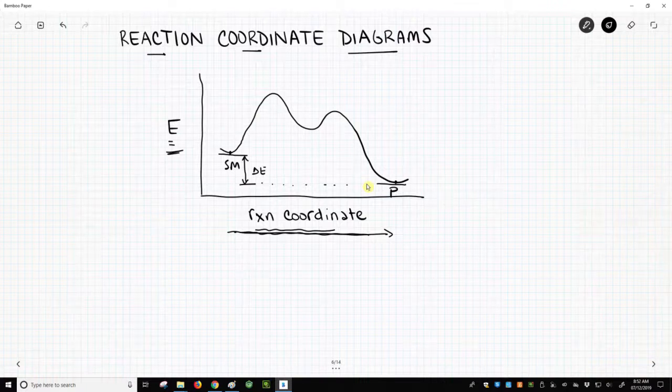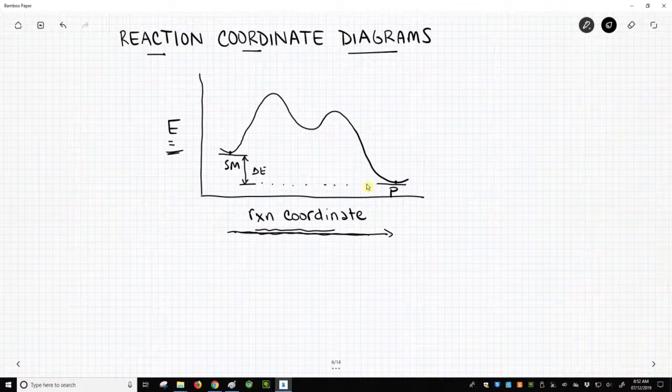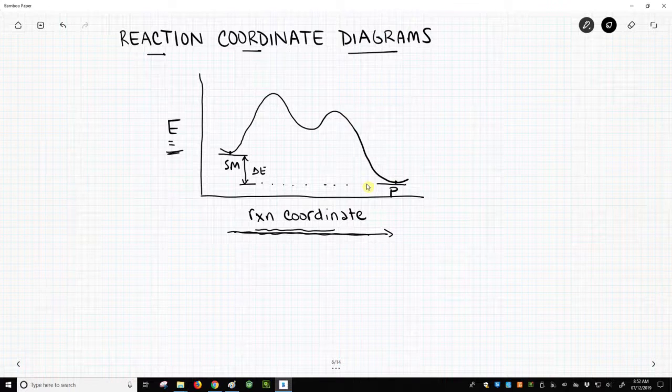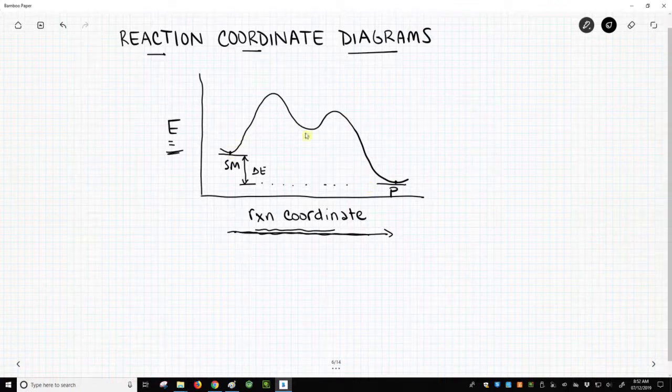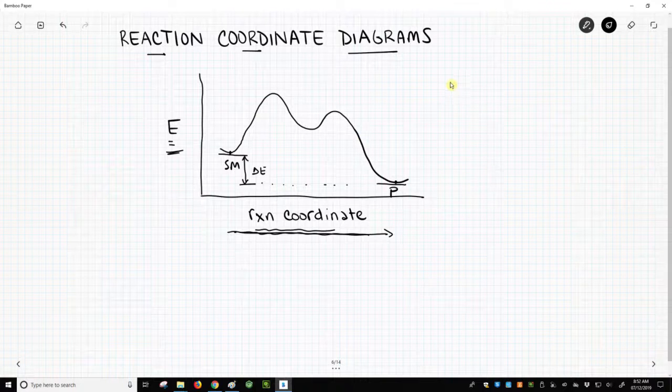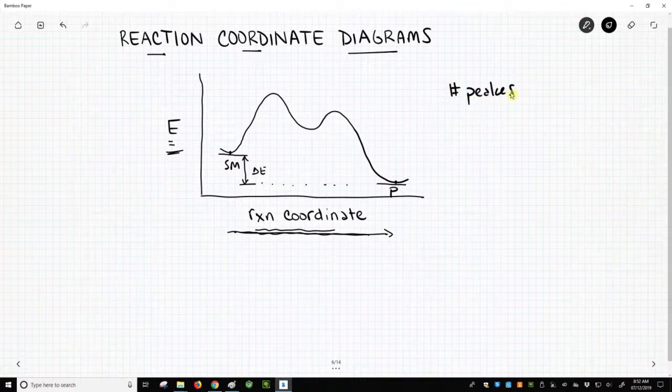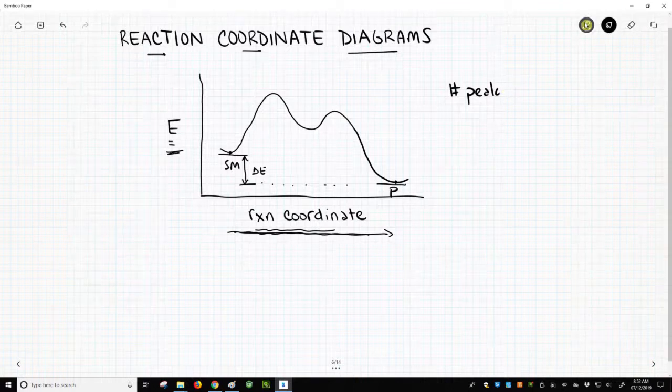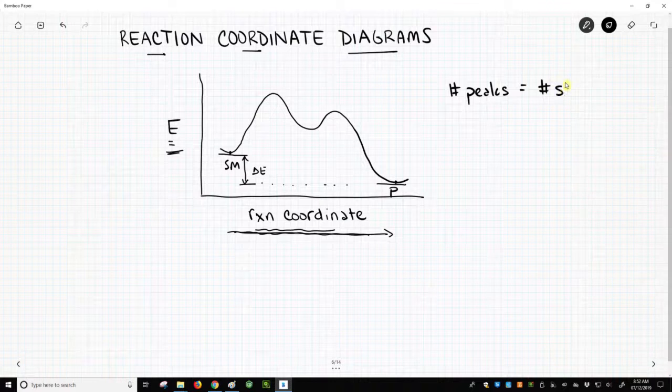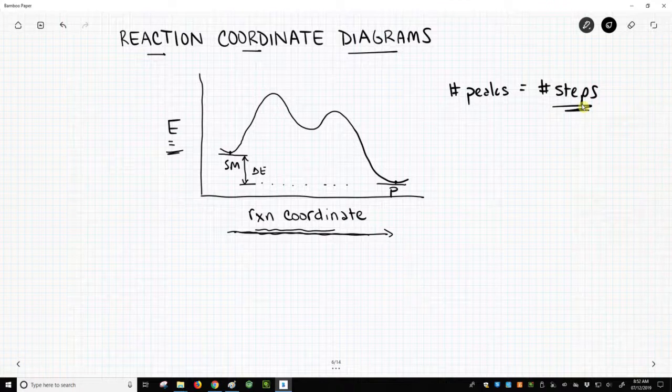Or the reactions can be uphill as well. Typically, our reactions are all going to be downhill processes, so the products will be drawn at lower energy than the starting materials. This particular curve has two humps, two peaks. The number of peaks in this curve is equal to the number of steps in our reaction. And that's the number of mechanistic steps, and we'll have to learn about that idea later.